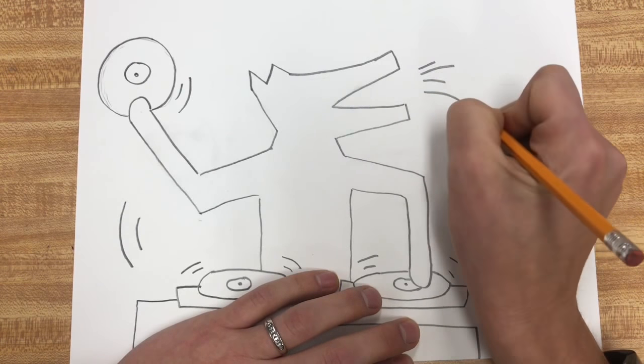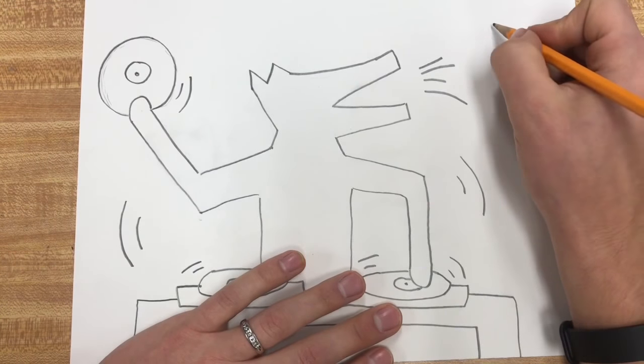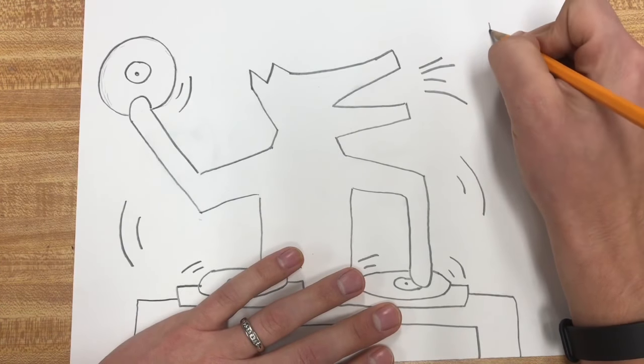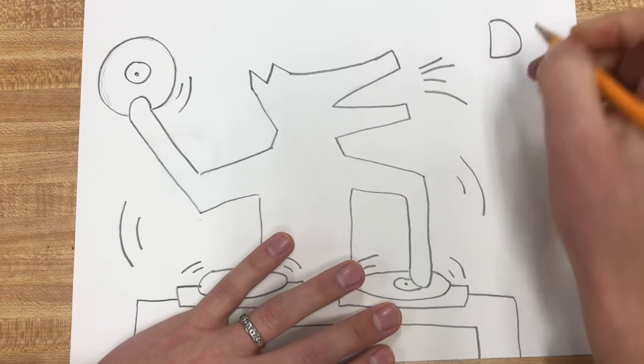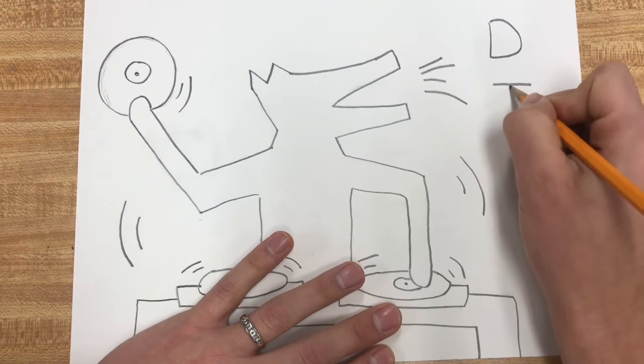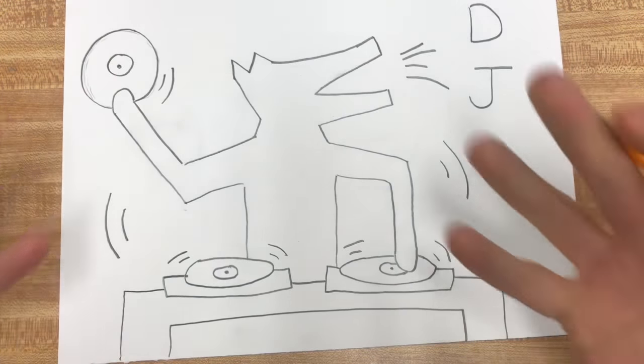And then the last thing is just writing the words D and J. Simple D up here and then a J, both uppercase. I like it. And there it is, we got our DJ Dog.